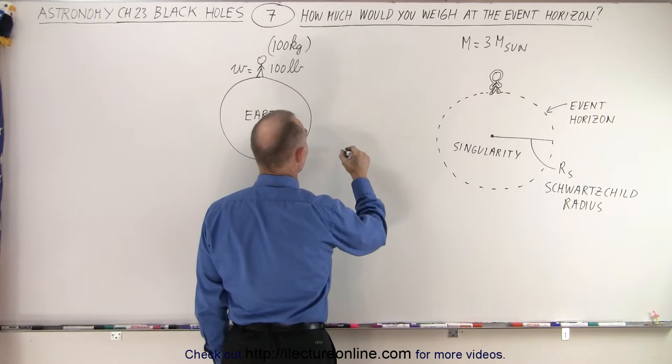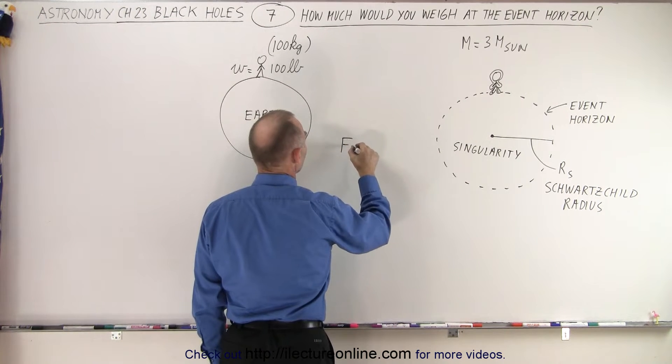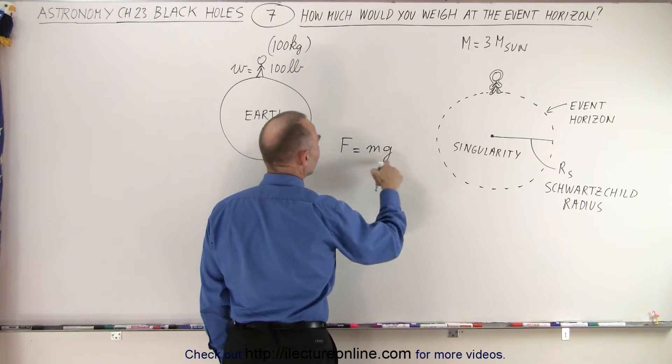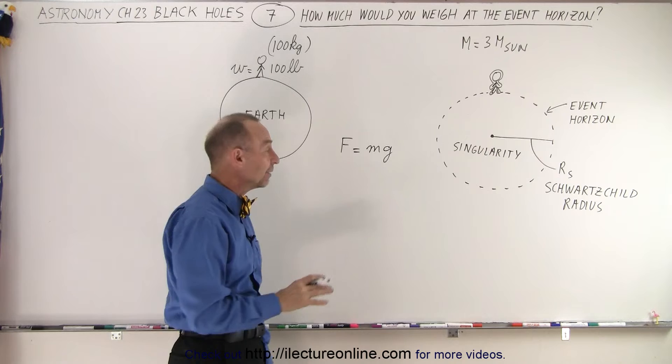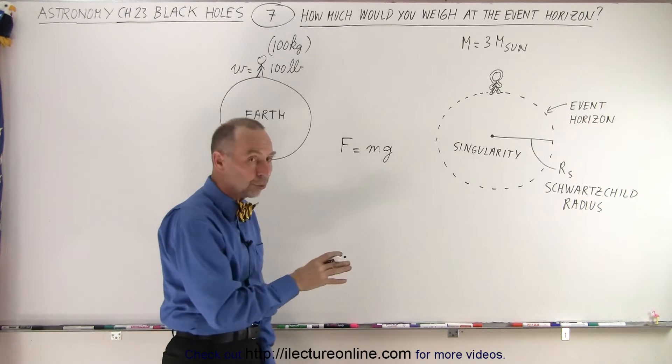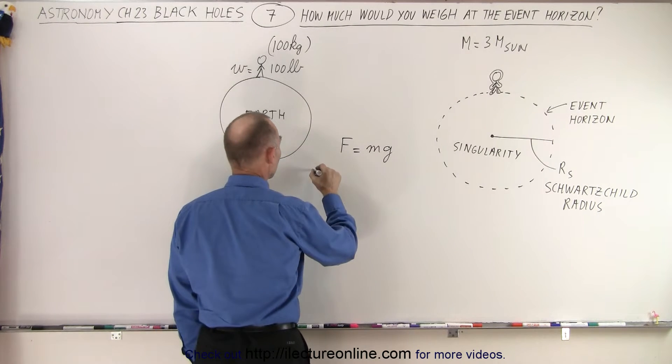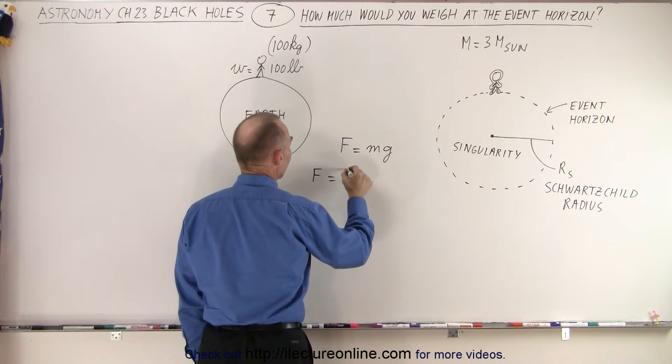As follows. We say that F equals MA, or in this case, M times acceleration due to gravity, and if we set that F equal to the force due to gravity, because of Newton's law, we can say that F is equal to F sub G